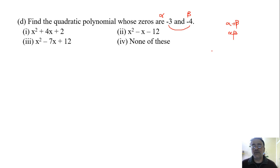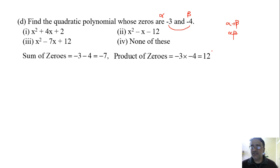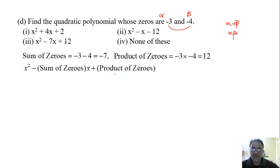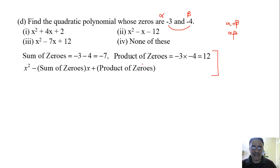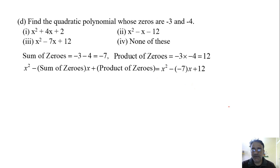We can use the formula directly. The quadratic polynomial is x² − (sum of zeros)·x + (product of zeros), which equals x² − (−7)x + 12, giving us x² + 7x + 12. For this question, steps are not critical as the examiner checks for the correct answer. So the final answer is x² + 7x + 12.